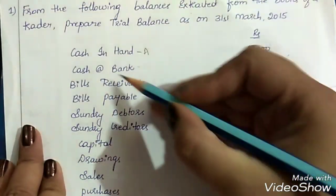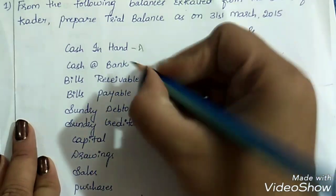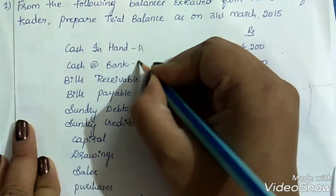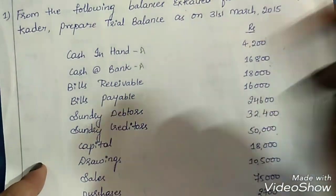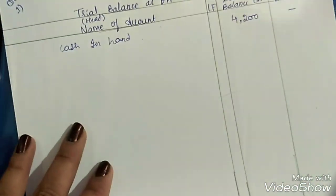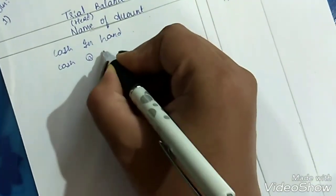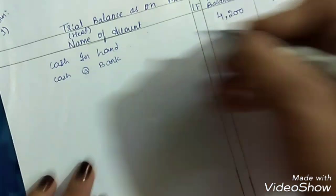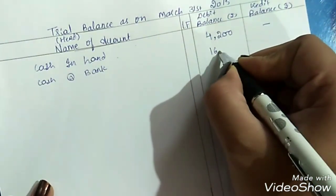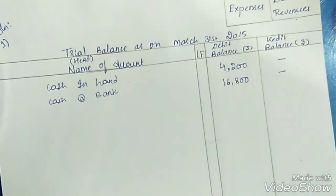Next is cash at bank. Cash at bank is also our asset, Rs. 16,800. Again, mention it in the debit amount column — cash at bank, Rs. 16,800.